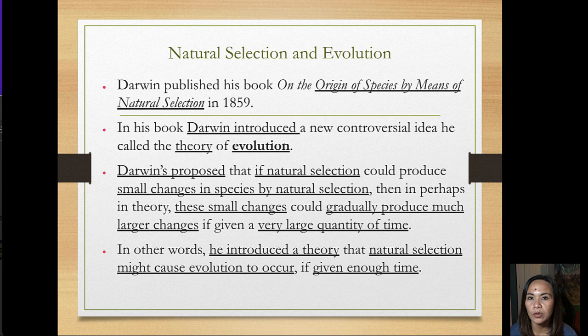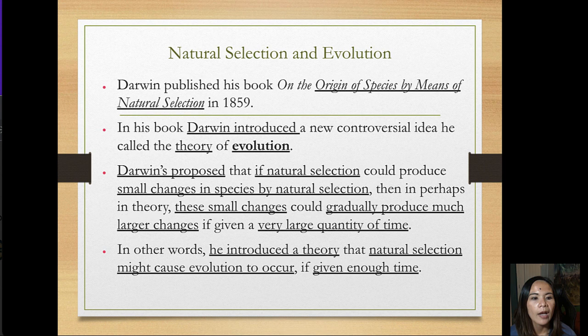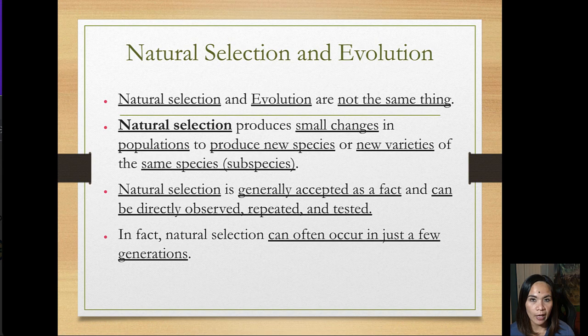Darwin proposed that if natural selection could produce small changes in species, then in theory these small changes could gradually produce much larger changes if given a very large quantity of time. In other words, he introduced the theory that natural selection might cause evolution to occur if given enough time.